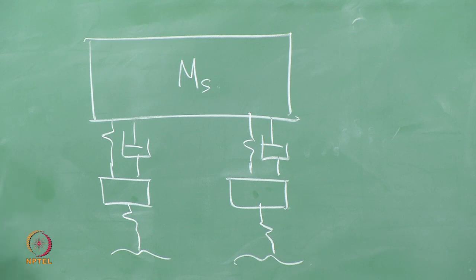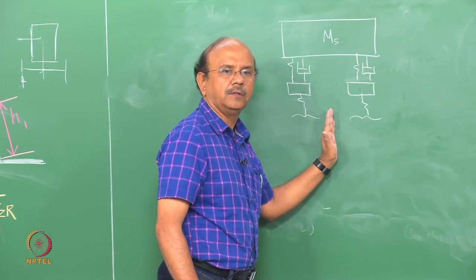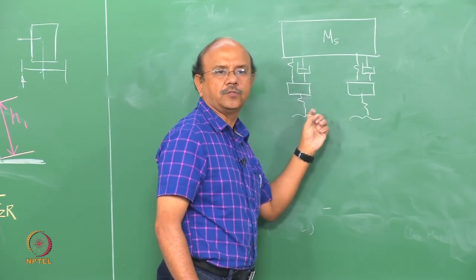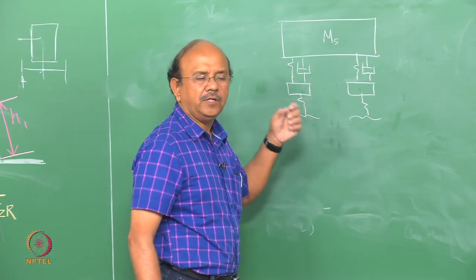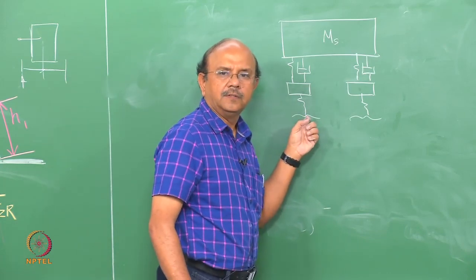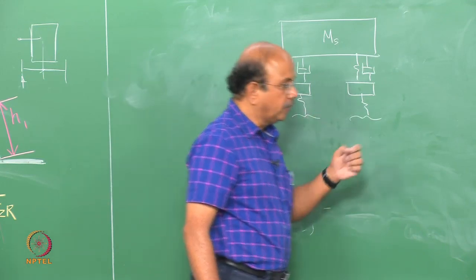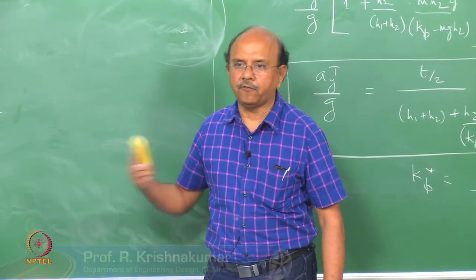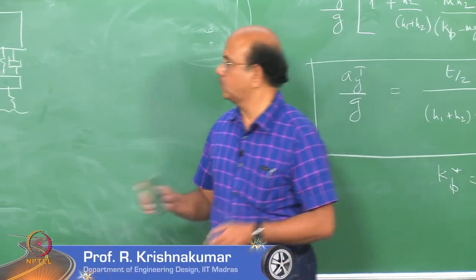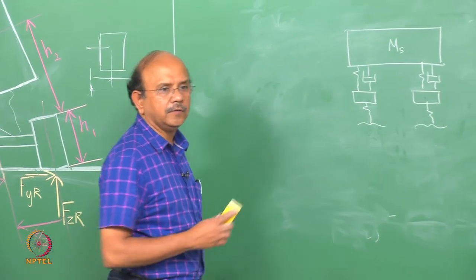We will first derive a four-degree-of-freedom system, then simplify to two degrees of freedom, and finally come to what is called the quarter car model. From that model we will understand how to tune the suspension. We will give an introduction to road statistical characteristics. The full derivation will continue in the next class.